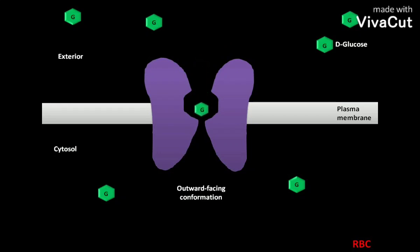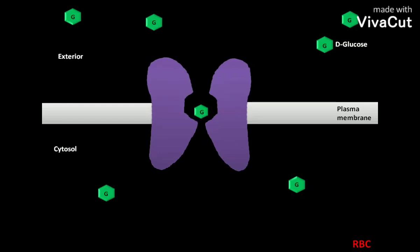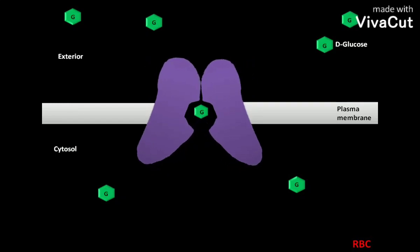D-glucose triggers a conformational change in GLUT1. As a result, the GLUT1 attains an inward facing conformation. Then glucose is released to the cytosol of RBC.